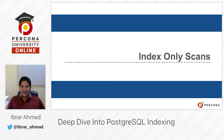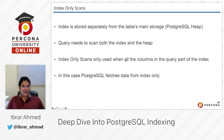Our next topic is index-only scan. We already know that an index is stored separately from the table's main storage, which in PostgreSQL terms is called the heap. So a query needs to scan both the index and the heap.